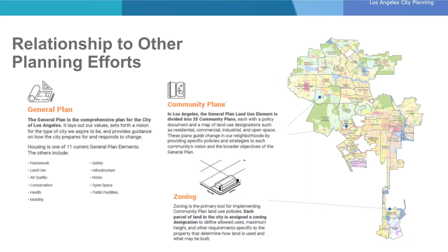The housing element is one of 11 current general plan updates for Los Angeles. The general plan sets high-level city-wide policy and vision. Because Los Angeles is so large, we have 35 community plans that make up the land use element of the general plan. Each community plan includes zoning — which details what can be built on an individual parcel — as well as policies and goals specific to that geographic area. City Planning is currently working to update all community plans and the general plan, with 16 active community plan updates.